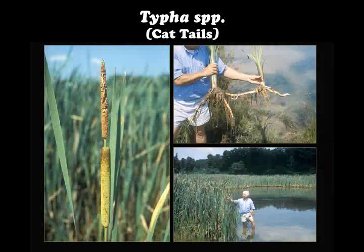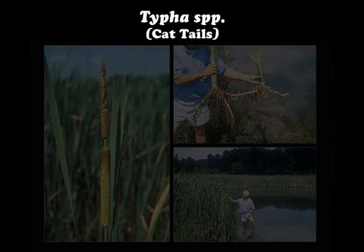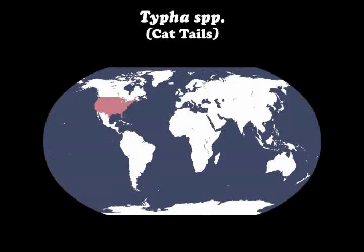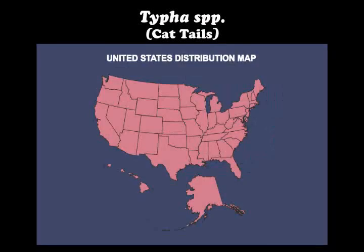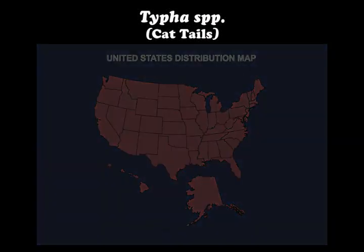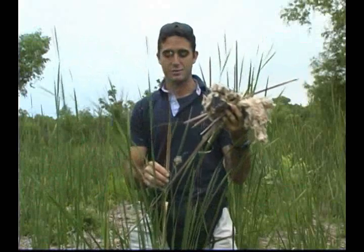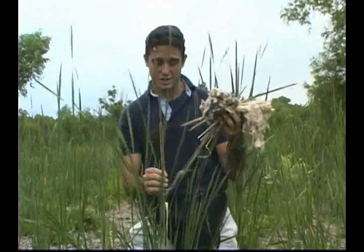The genus Typha, or cattails, is comprised of four species, all of which are native to the United States. Plants grow in marshes, shallow water, wet ditches, and along river banks. All species tolerate, in a decreasing degree, some salinity.